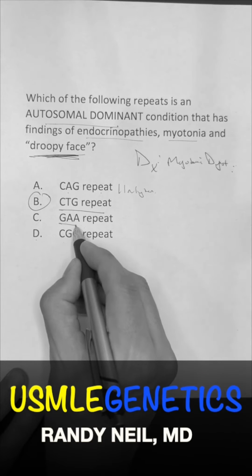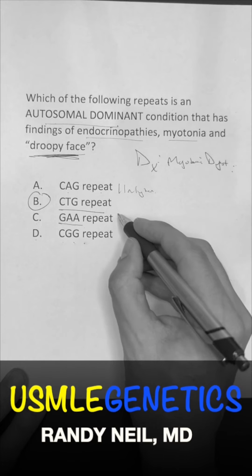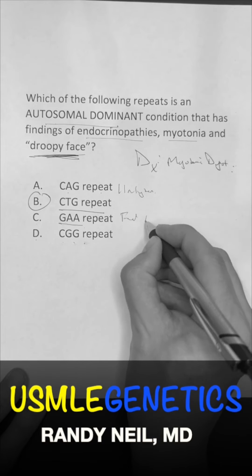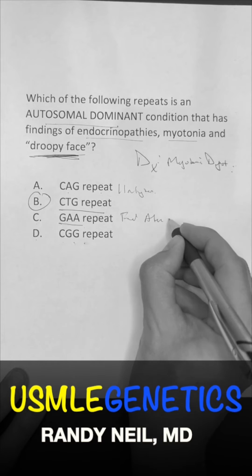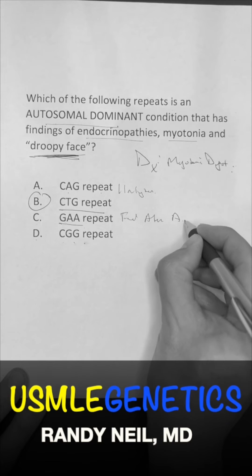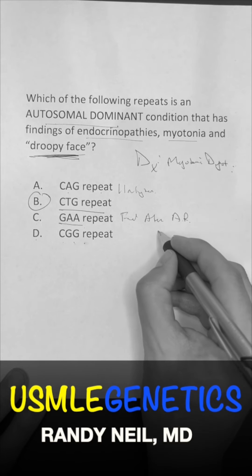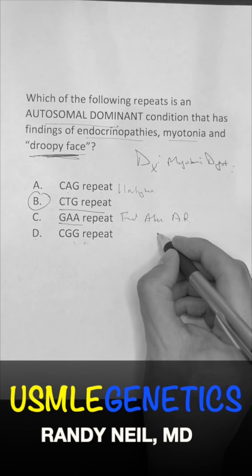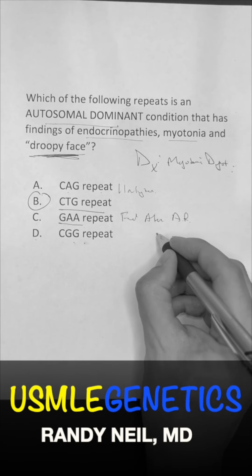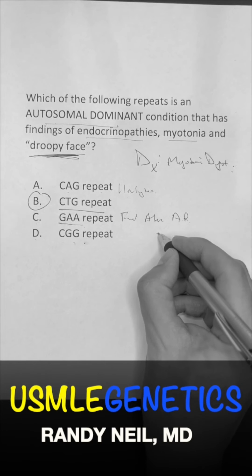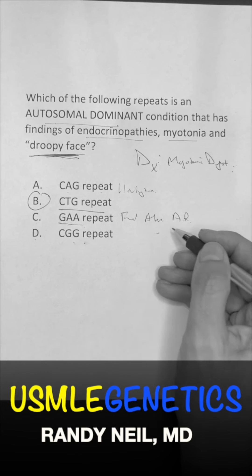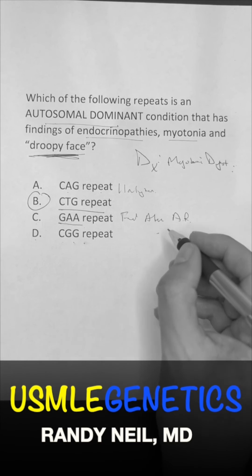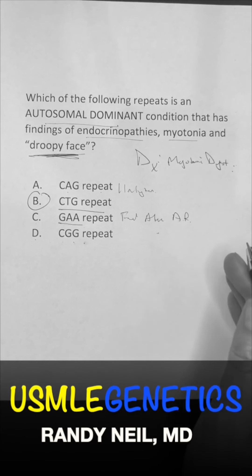GAA is going to be Friedreich's ataxia. This one is actually autosomal recessive. The frataxin gene is associated with this, and the main site of pathology is located in the mitochondria. You're going to think it's in the posterior columns and dorsal ganglia, so you're going to have limb ataxia.